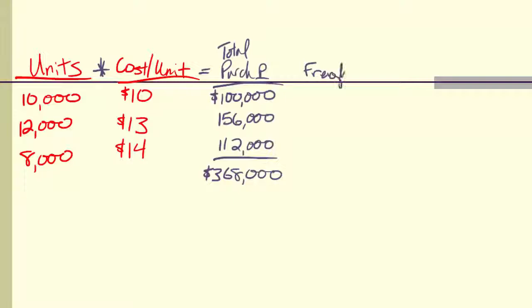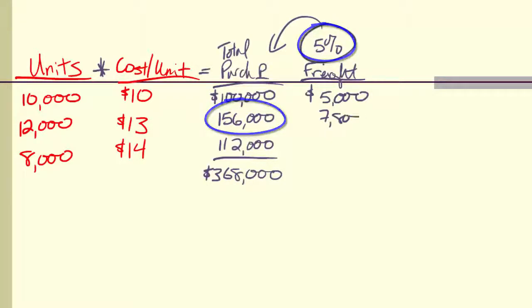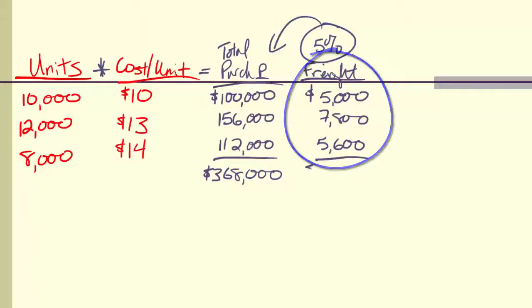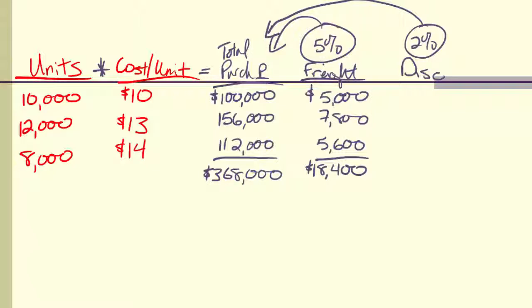Next thing then is my freight. And we were told that our freight costs were 5% of your purchase price. So 5% of 100,000 is 5,000. 5% of 156 is 7,800. 5% of the 112 is 5,600. And if I add those up, the total amount you spent in shipping was $18,400. The last thing we need is our discount. And our discount is 2%, and it's 2% again of the total purchase price, but you only got it on the first one and the second one. So 2% of 156 is 3,120. And we missed it for some reason down here. So we end up with total discounts of 5,120.